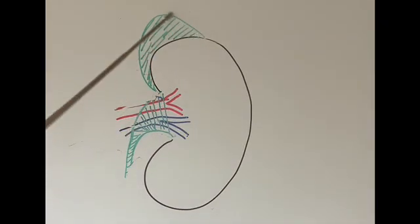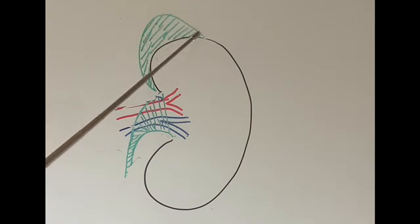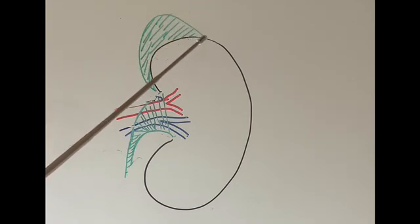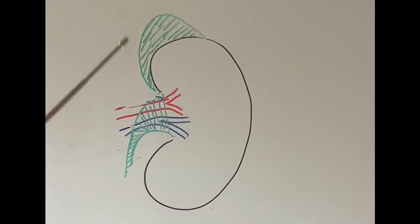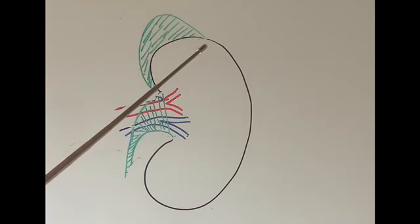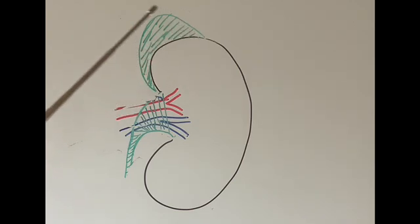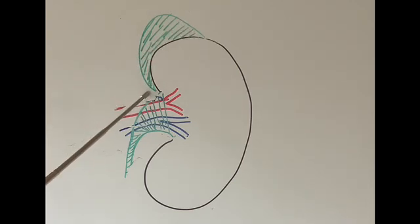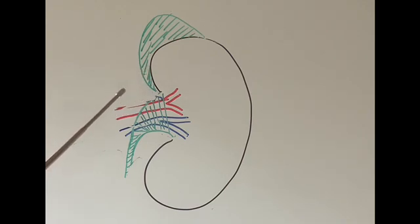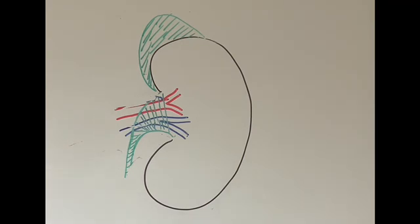On top of each of our kidneys is a small organ or gland called the adrenal gland — it's like a cap sitting on top of each kidney. The left adrenal gland sits on top of the left kidney, and the right adrenal gland sits on top of the right kidney. This is one of the most important glands in our body, and I'm going to talk about it in a separate series of videos.